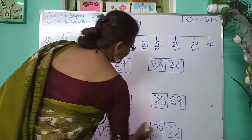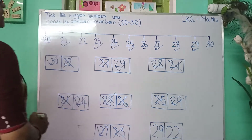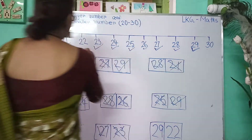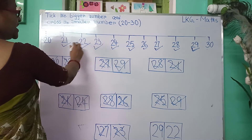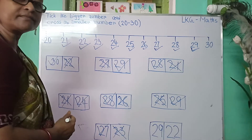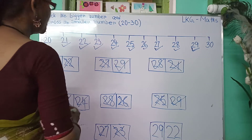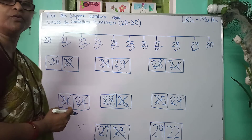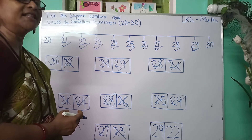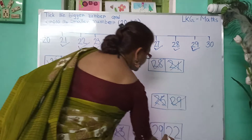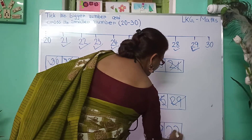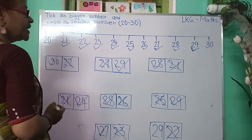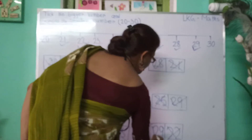Here are 29 and 22. Here is 29 and here is 22. I have written 22 first. So, 22 is the smaller number — 22 is smaller than 29 — so I will put a cross. And 29 is the bigger number, so I will put a tick.